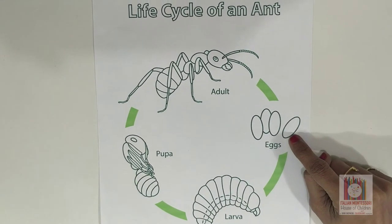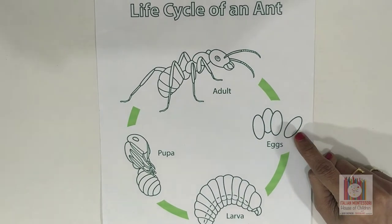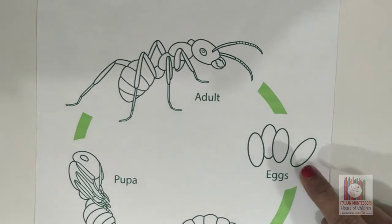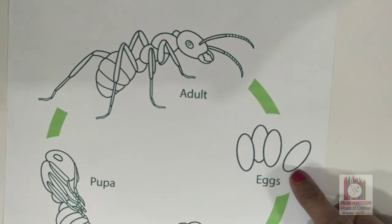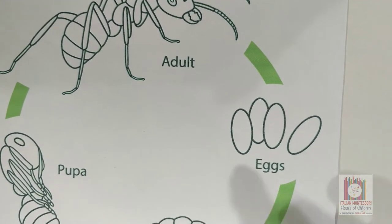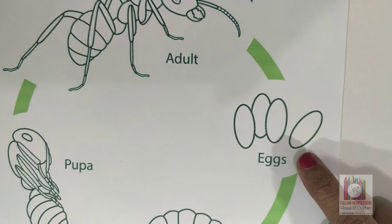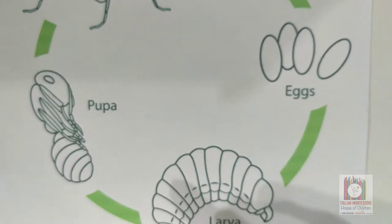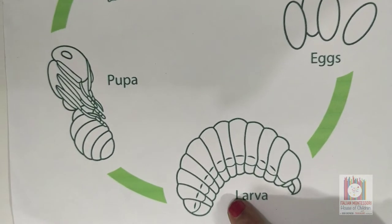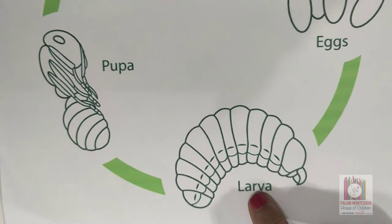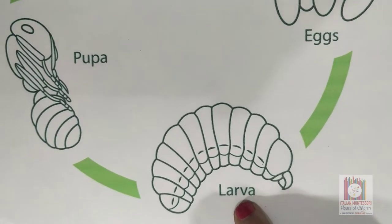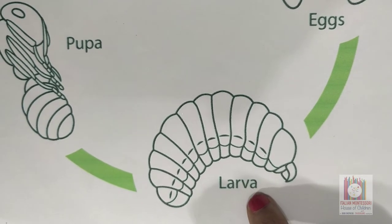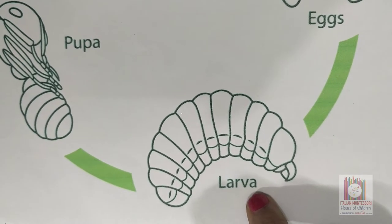The first stage is egg. An ant's life cycle begins with the egg. The tiny egg hatches into a worm-shaped larva. This larva doesn't have eyes or legs, and it won't look similar to an ant.